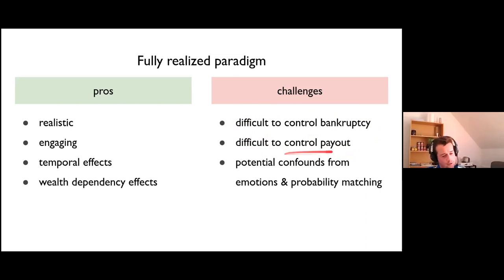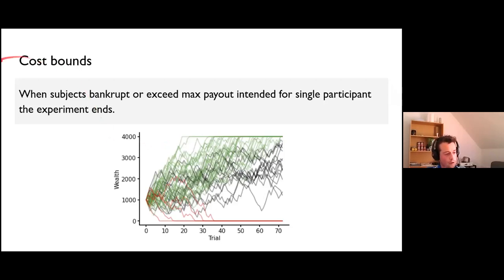We cannot, from ethical reasons for example, include the possibility of having debt. Also, in the multiplicative dynamic, it's very easy to control the max payout because if you multiply something many times, you can easily imagine how fast it can grow. There are also some drawbacks of this design that are potential confounds from emotional processing and probability matching, which is seeing patterns in randomness which are not there. This is a problem, a general problem in this type of experiment.